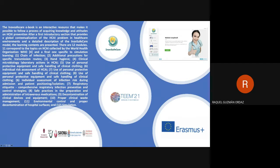The modules cover: chain of infections; additional prevention for specific transmission routes; hand hygiene; clinical microbiology laboratory; use of personal protective equipment and safe handling of clinical clothing; individual risk assessment of HCAI; individual assessment of infection risk during admission and patient isolation; respiratory etiquette; comprehensive respiratory infection prevention and control strategies; safe practice in the preparation and administration of intravenous medications; decontamination of clinical devices and equipment; clinical waste management; environmental control and decontamination of hospital surfaces; and a final simulation module.